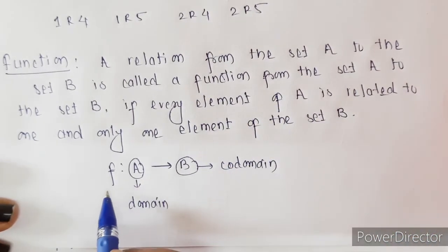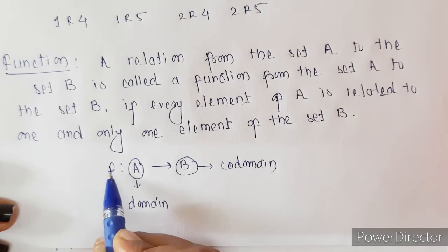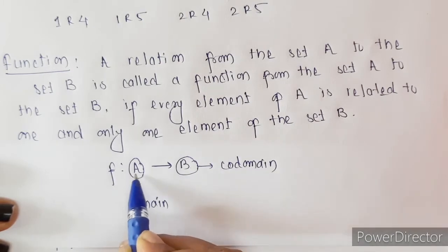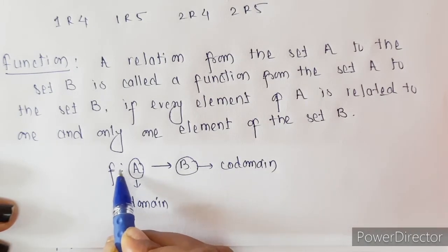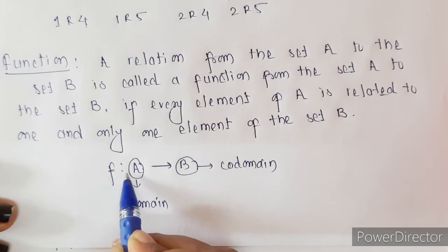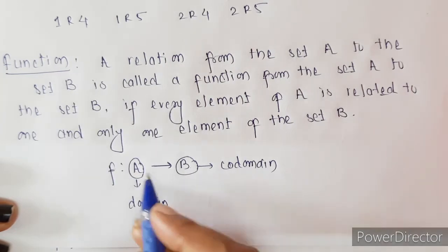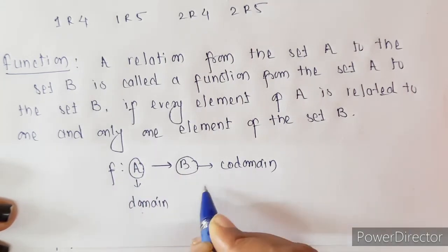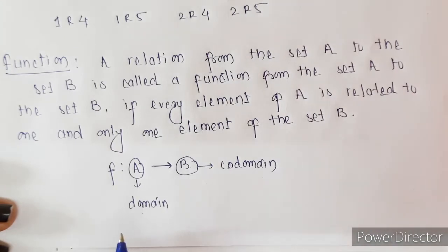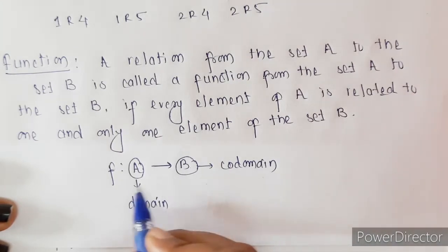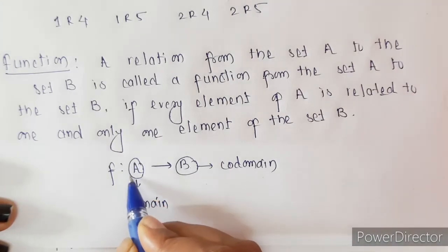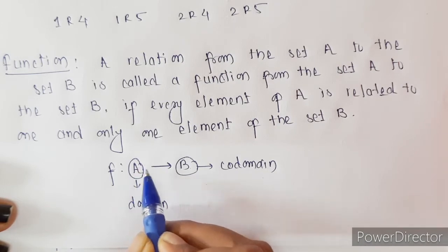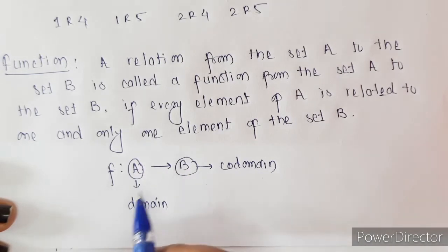A function is denoted as f from A to B, meaning f is a function from A to B. Here, A is called the domain of the function and B is called the co-domain of the function, and every element of A has to be related to one and only one element of B.